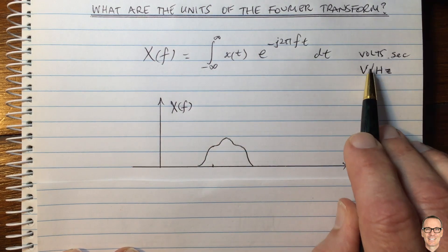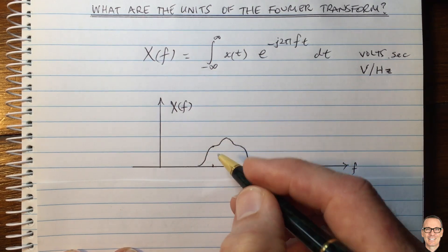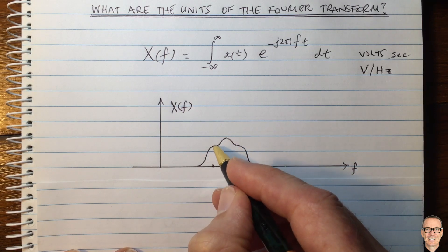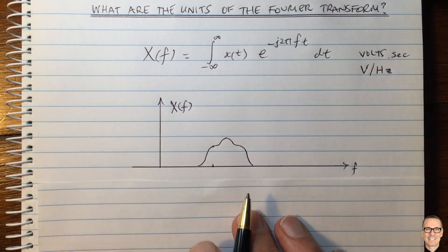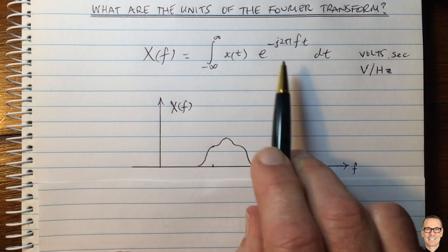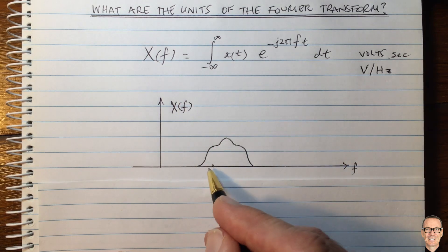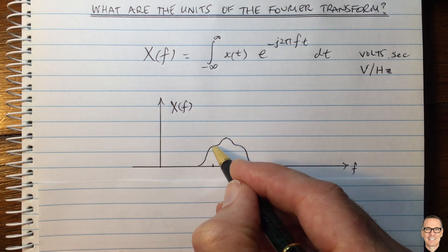That's what we're talking about when we're talking about the units. So this height here, I think we're pretty familiar with thinking that that height tells you that there is a component of the time domain signal which is at that frequency and has that value.